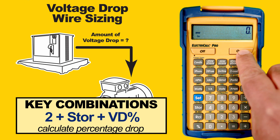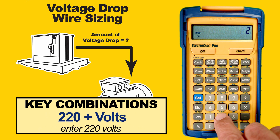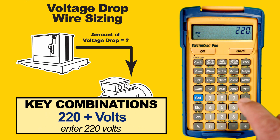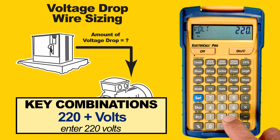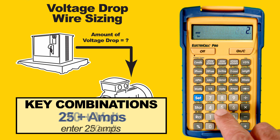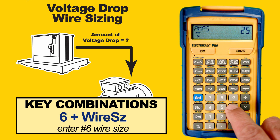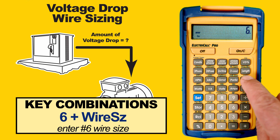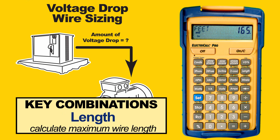We have 220 volts, 25 amps, and we're going to use number 6 Romex. So we enter 220, then press the Volts key. Enter 25, then press the Amp key. Then enter 6 and press Wire Size. Pressing Length will calculate the maximum length it can go.